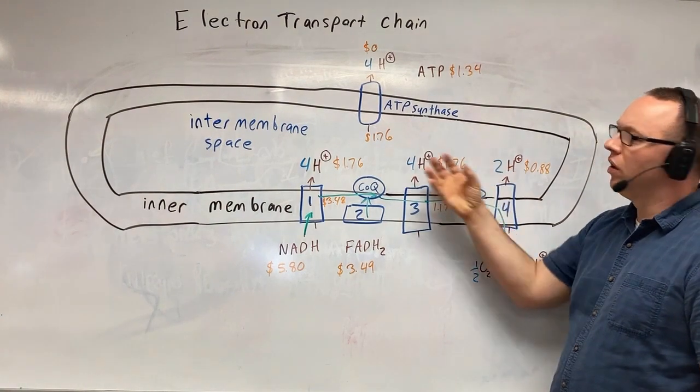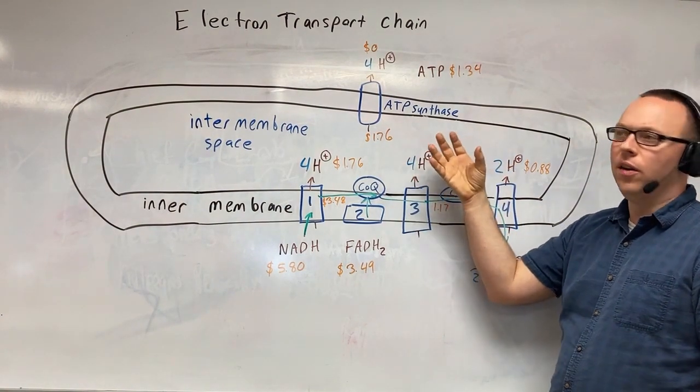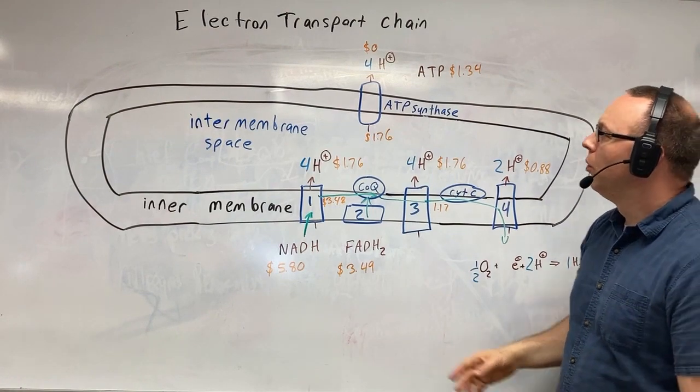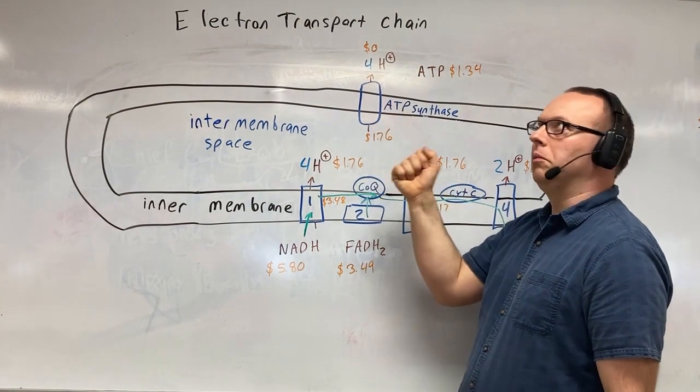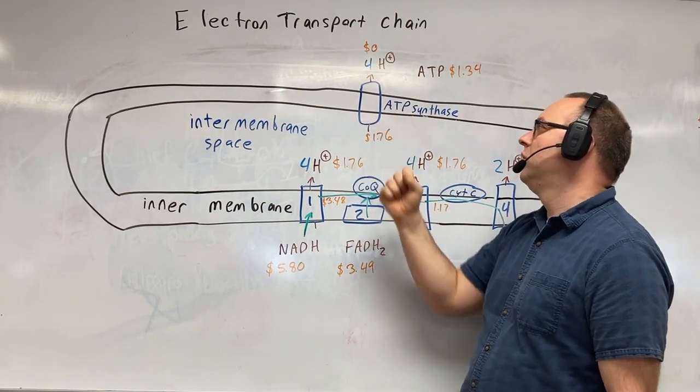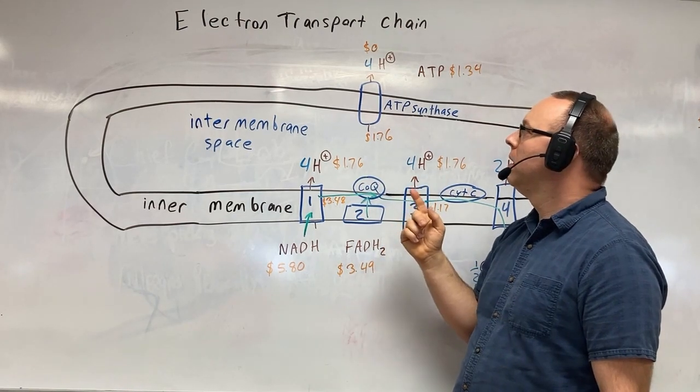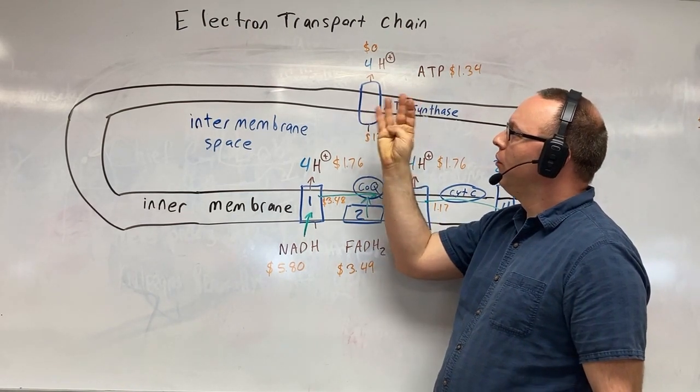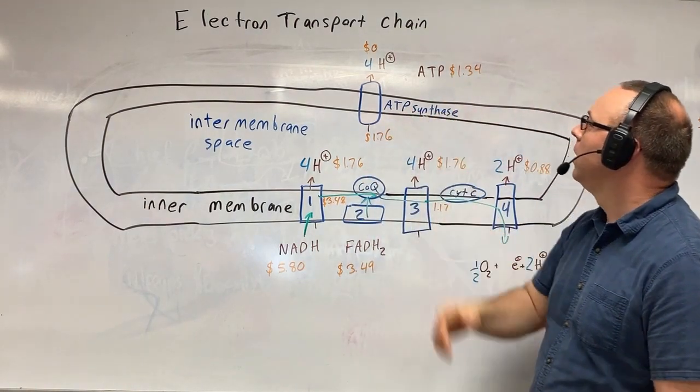All of this is storing lots and lots of energy in this area. This ATP synthase, we're going to allow four protons out because they really want to get out of here because we've been forcing them all in here. But we're going to make a deal. If we let you out, if we let four of you guys out, you're going to have to make one ATP.